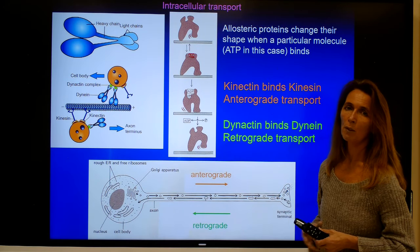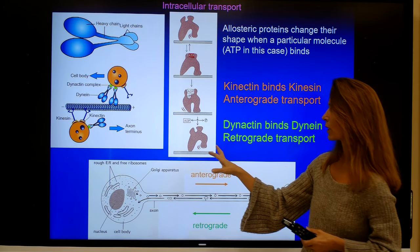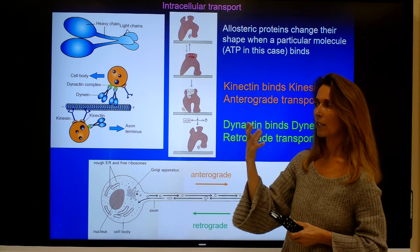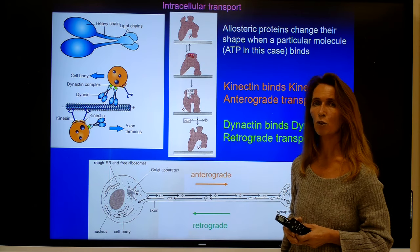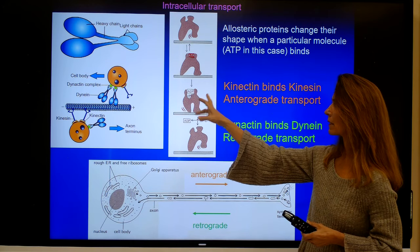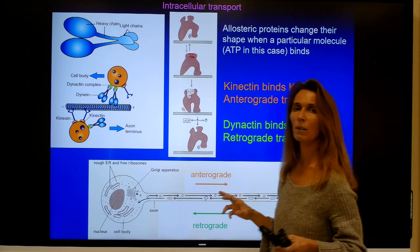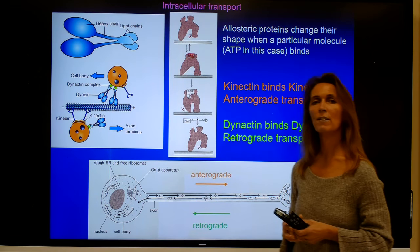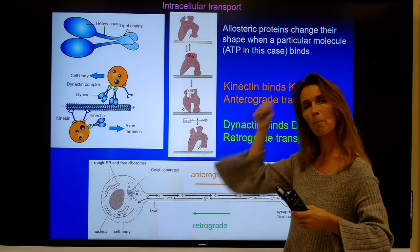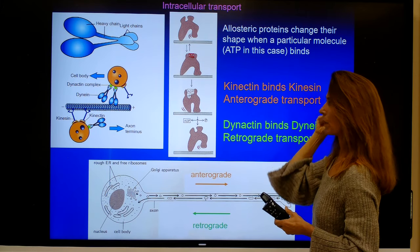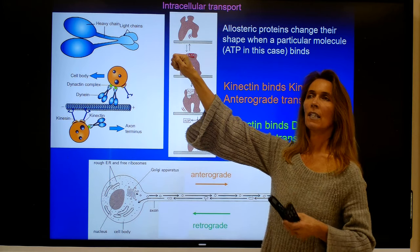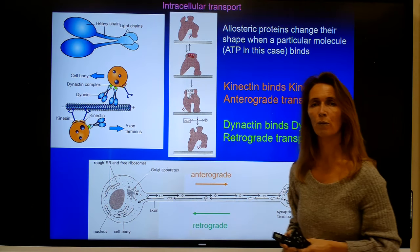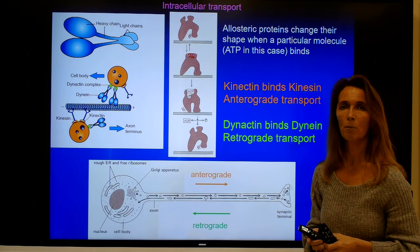There are a number of transport mechanisms described in the literature. The more classical mechanism involves these motor proteins — dynein and kinesin — where an allosteric enzyme changes its conformation as ATP binds to it, making this an energy-dependent process. This step-like conformational change walks the vesicle along the microtubules to its destination. A more recently described transport mechanism is more like a monkey bar swing of proteins transporting vesicles — similar to monkeys swinging from branch to branch.